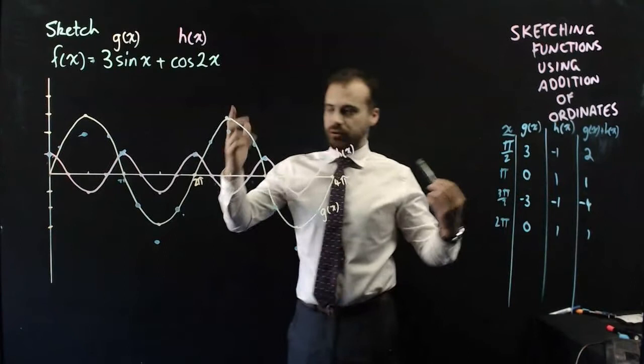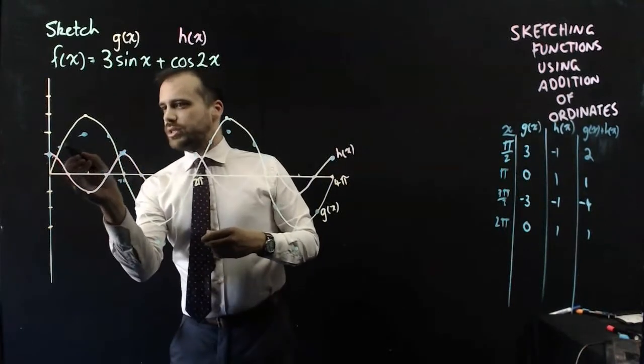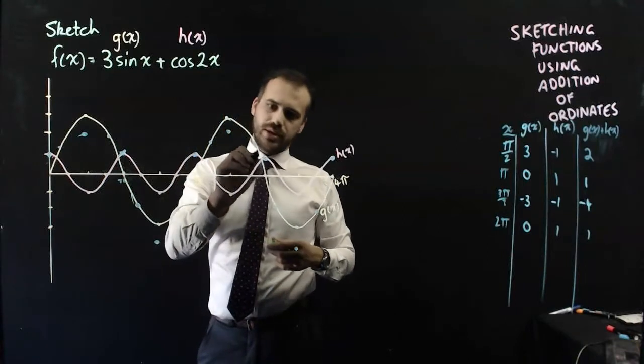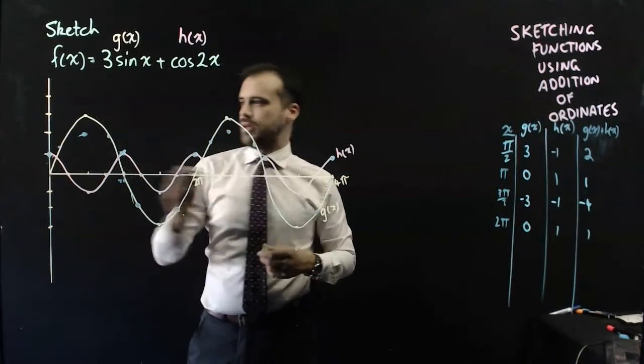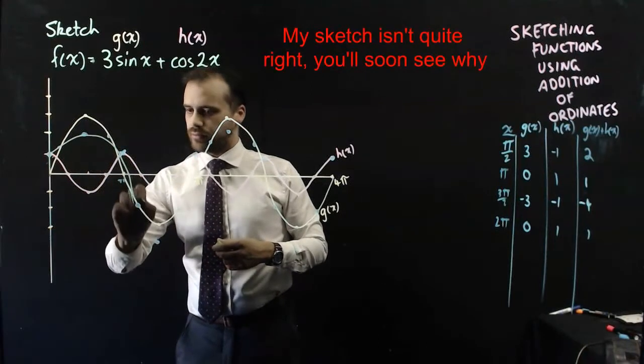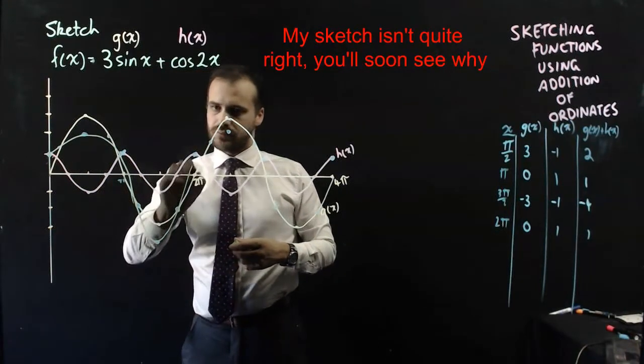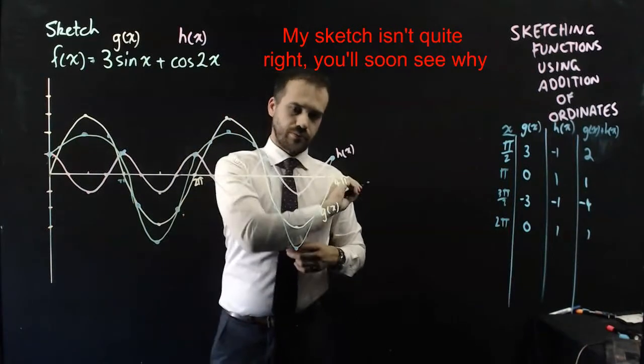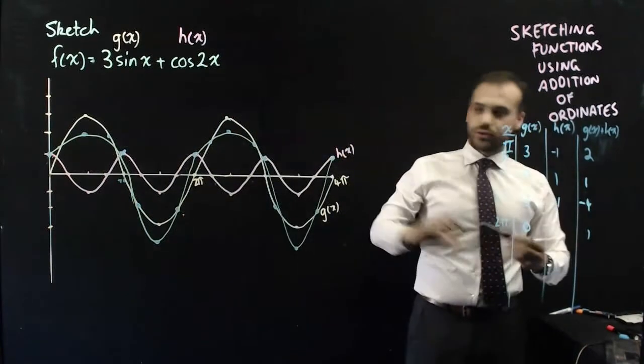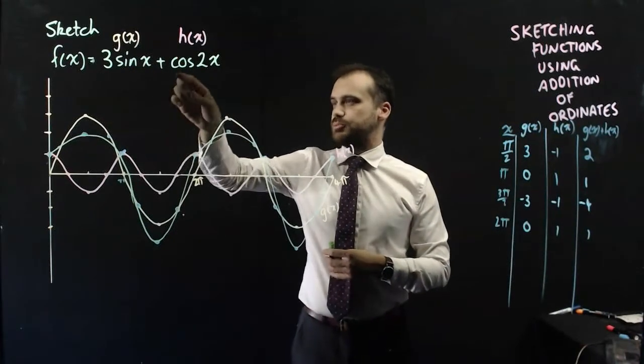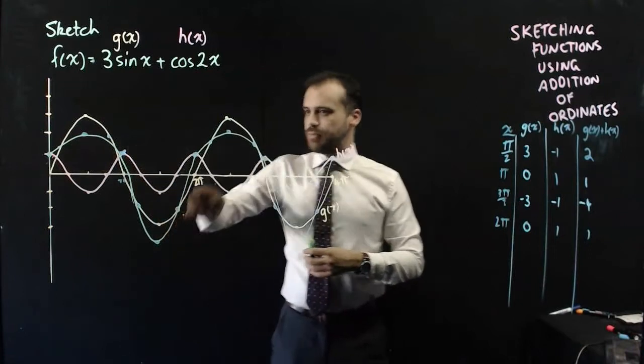All right, let's draw in my graph. So I'm going to be able to join these points, and then swoop down there, and join those points, and swoop down there, and it's going to look something like this. Okay, and that green function is f(x) = 3sin(x) + cos(2x). And I've been able to sketch that, having never ever seen that equation before, no idea what it looks like.